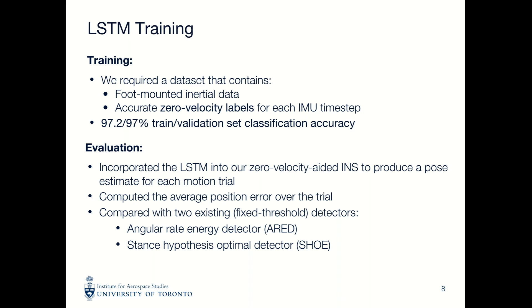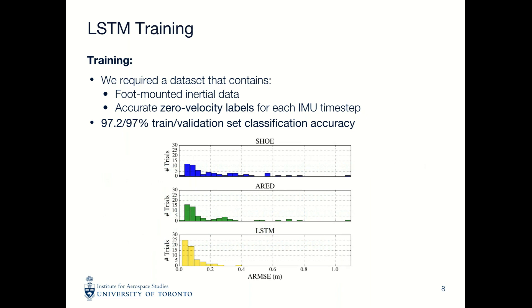Our best performing model achieved approximately 97% classification accuracy on both the training and validation sets. We incorporated our LSTM into our zero-velocity-aided INS to produce a pose estimate for each motion trial collected, and computed the average position error for each trial, comparing it to two existing fixed threshold detectors. This error histogram shows that our LSTM-based classifier, represented by the yellow bars, is much more accurate than the fixed threshold detectors represented by the blue and green bars. Our classifier operates consistently across motion types, whereas existing detectors with a fixed threshold typically work well only for a specific motion type.